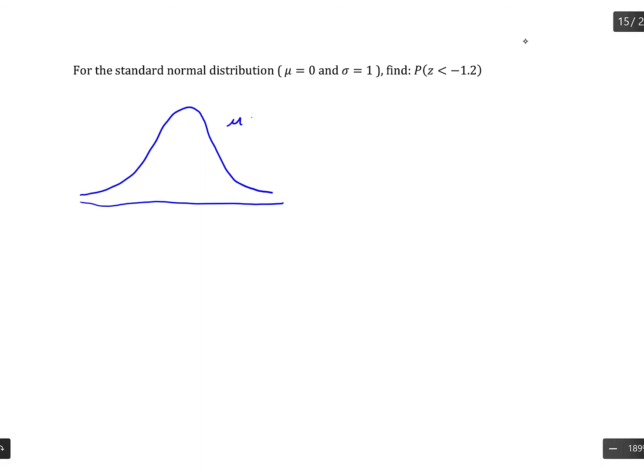Put the pertinent information on that bell curve. So we're going from mu equals 0, standard deviation of 1, because we're on a standard normal distribution. The mean is always located in the center.